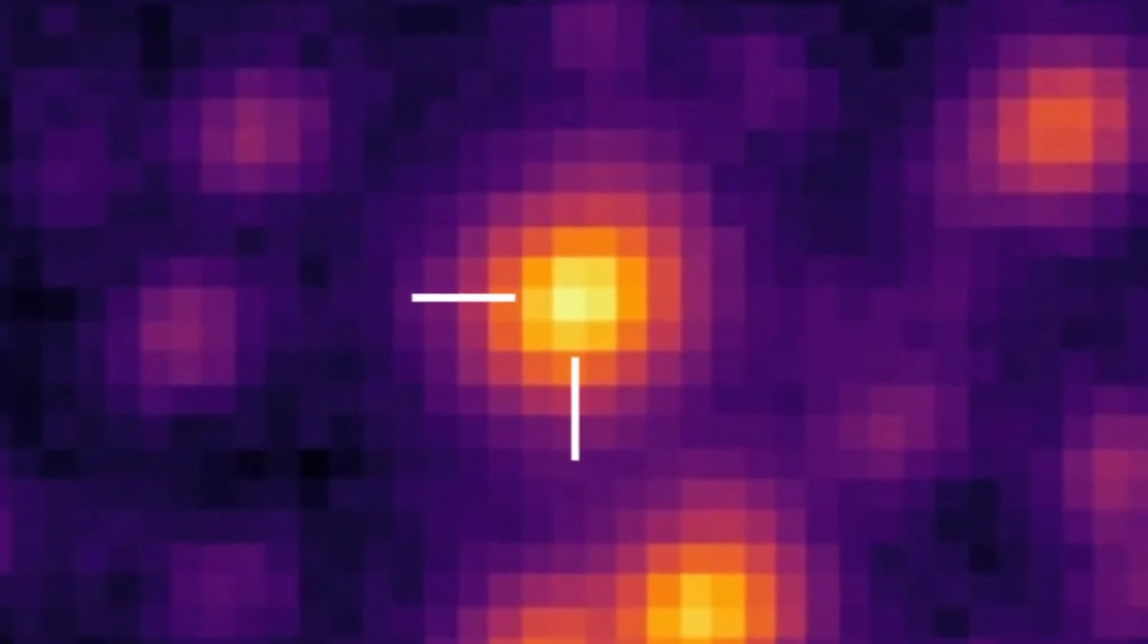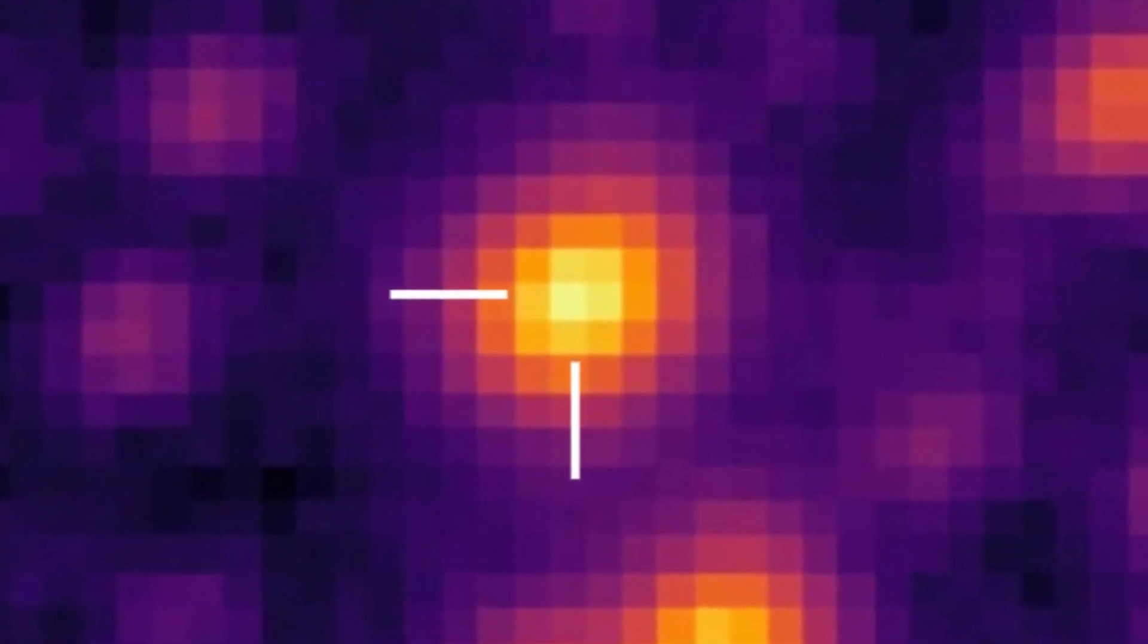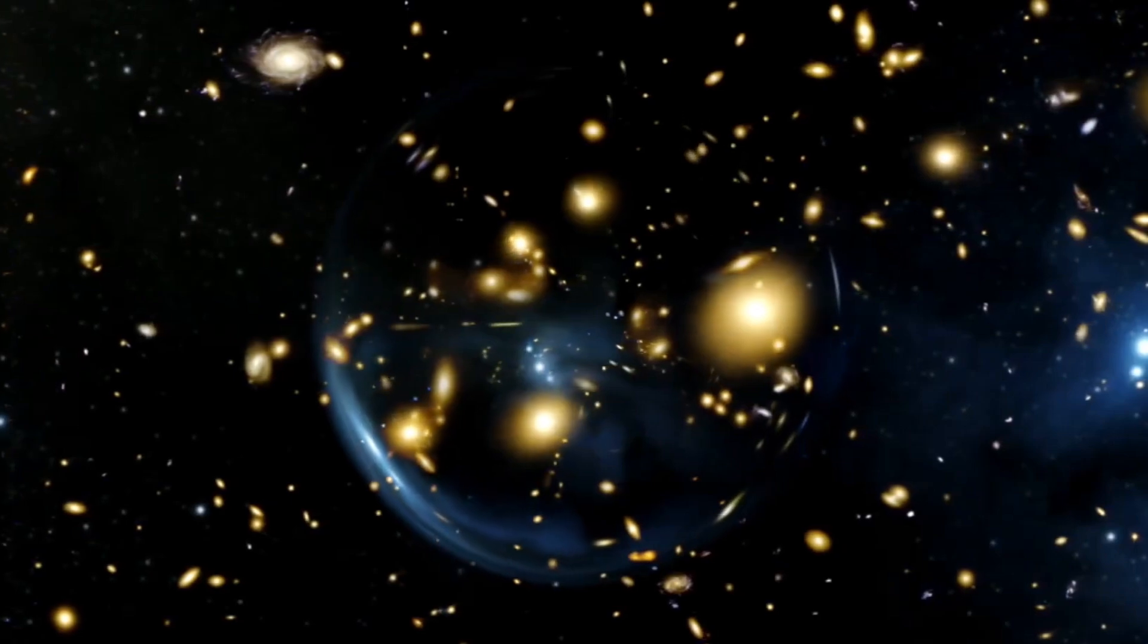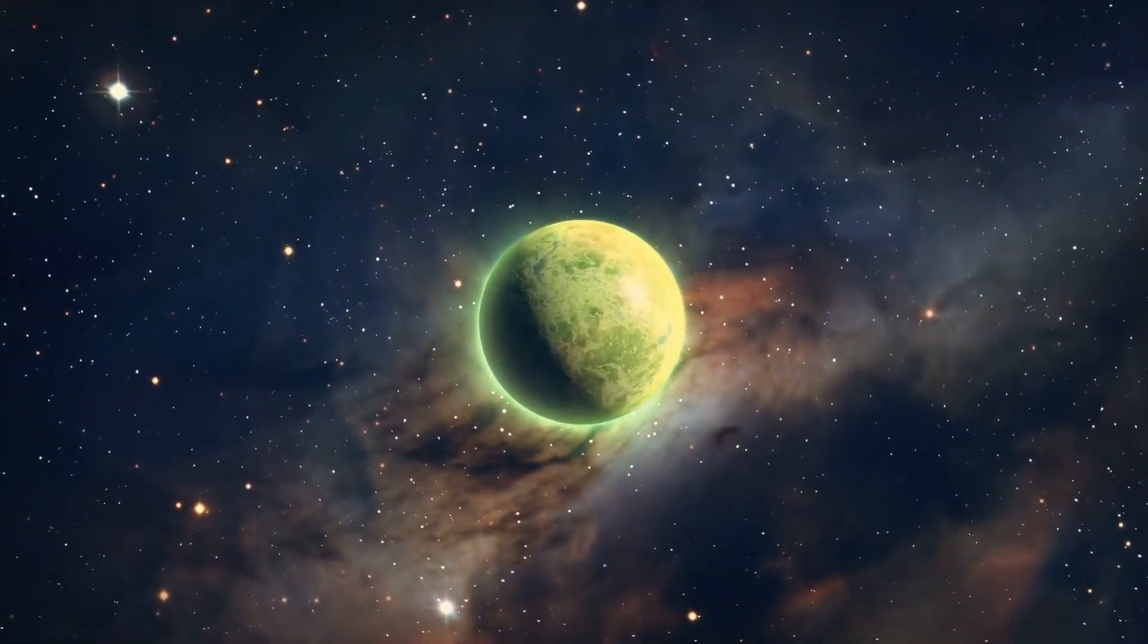Detected by the Korean microlensing telescope network in 2020, this system caught astronomers' attention when it magnified a distant star's light by a factor of 1,000, acting as a gravitational lens.